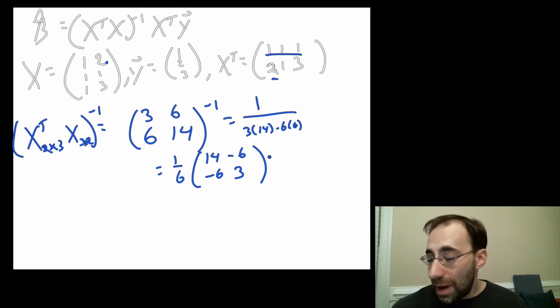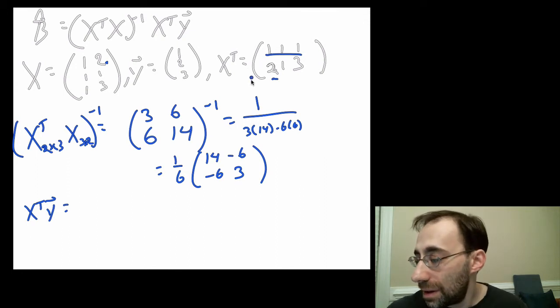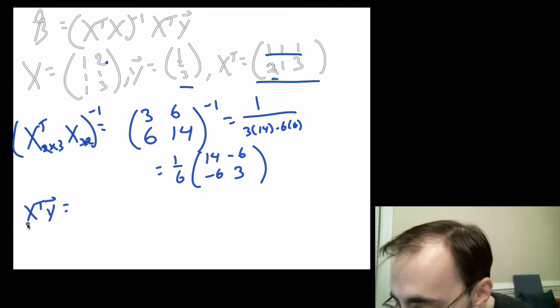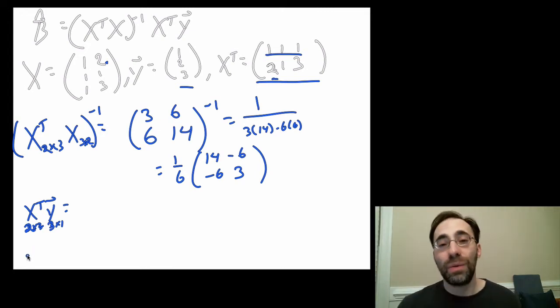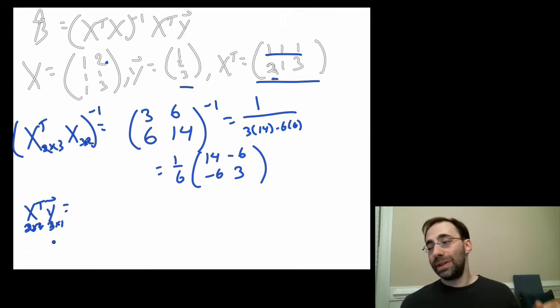Now we need X transpose y. What's that? It's this one over here times this one. Because y has three rows, X transpose is two by three, y can be thought of as three by one. So two by three times three by one gives you a two by one matrix. This is two by three, this is three by one. So we're going to get a two by one column vector with two elements, which we want, because we want an alpha and a beta.